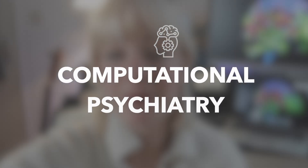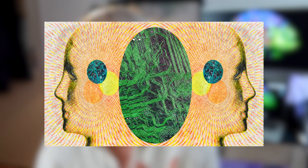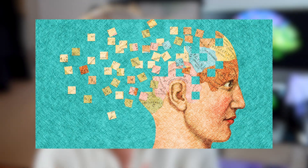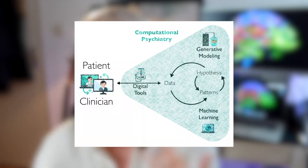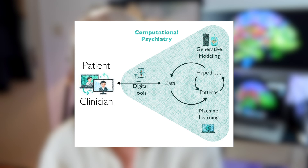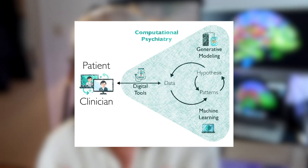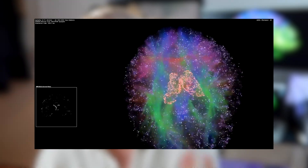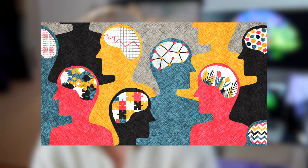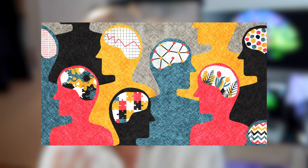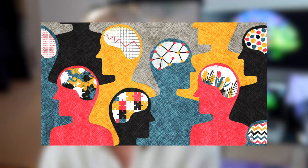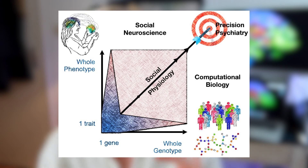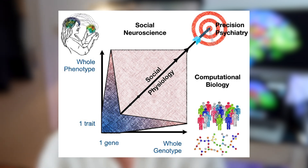So what is computational psychiatry? It is an interdisciplinary field that uses computational methods and models to understand the underlying mechanisms of mental disorders and to develop new treatments. This field combines techniques from computer science, mathematics, and engineering with knowledge from neuroscience and psychiatry to create mathematical models of the brain and behavior. These models can simulate brain activity, test hypotheses about causes of mental disorders, and predict the effect of different treatments.